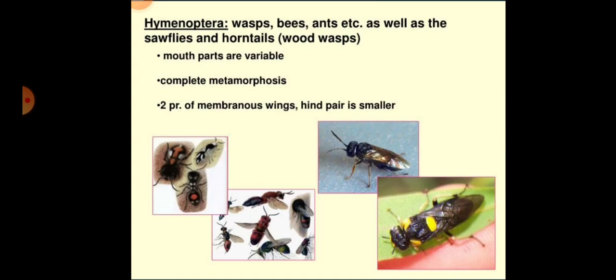The first abdominal segment is fused with the metathorax forming the propodium; the rest of the abdomen forms the gaster or metasoma. The first gastral segment is broad and unmodified in Symphyta, while modified into a petiole in Apocryta. The ovipositor in Hymenopterans is well developed, secondarily modified for sawing, boring, stinging, or piercing.